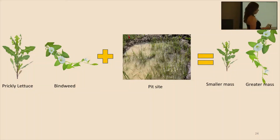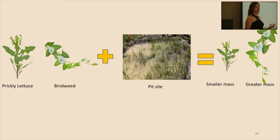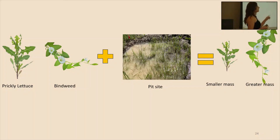For bindweed, it is a moisture-loving plant. We had a lot of flooding in the pit sites, and as bindweed is an introduced perennial — meaning that it comes back every single year — its roots are already established, so it's more well positioned to absorb moisture in this environment than prickly lettuce would be. Prickly lettuce also prefers drier conditions, so it probably just got drowned and the biomass wasn't as great.